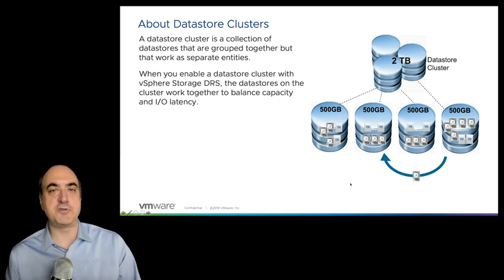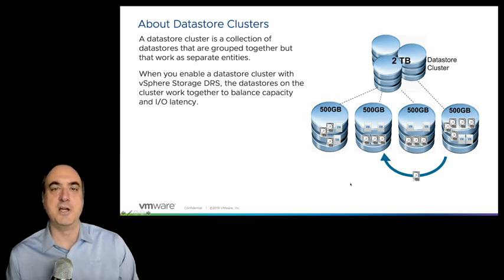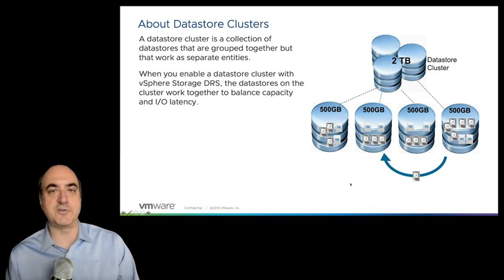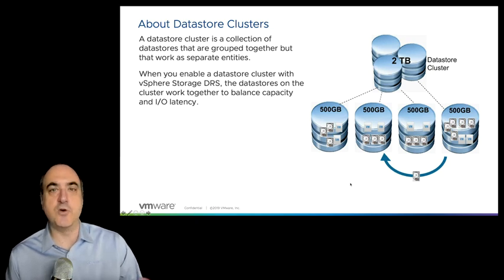As data stores get near full, storage DRS will use storage vMotion — or a storage migration if the VM is off — to migrate VM files to other data stores that are less full, creating balance in storage utilization. Storage DRS's primary goal is to make sure no data store hits absolute full capacity. By default, it keeps data stores at no more than 80% utilization.